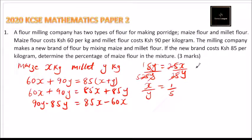This means that the ratio of X is to Y is 1 to 5, meaning 1 kg of maize will be mixed with 5 kg of millet so that the cost is 85.